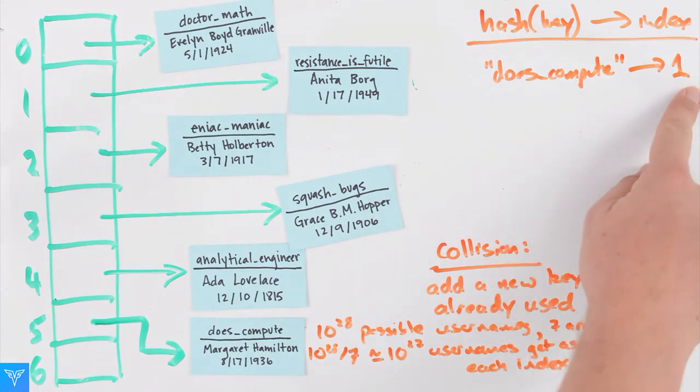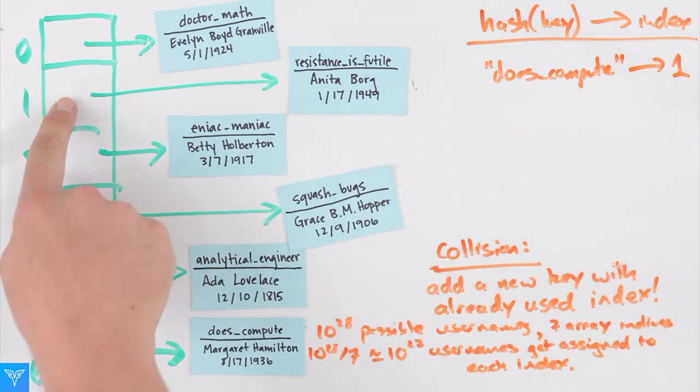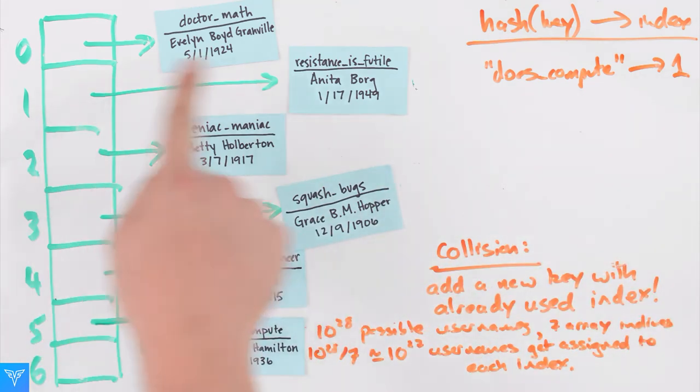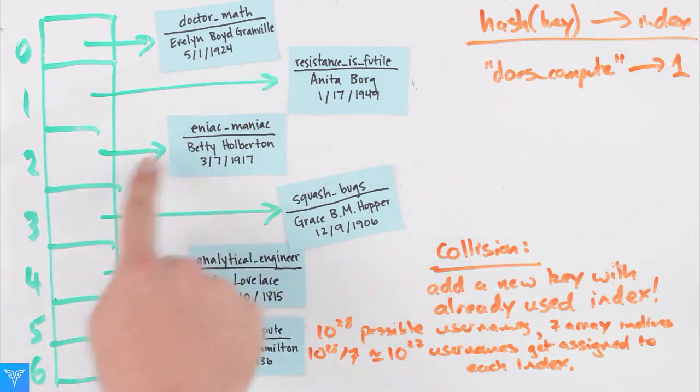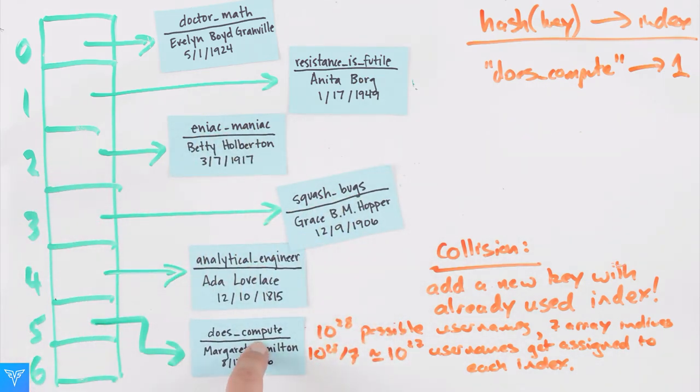How would we find does compute? First, our code computes the hash of does compute, and gets the index one, not five. Our code would start by looking at position one, and see does compute isn't stored there. So it would look at the next element, and it keeps checking until it reaches position five, and finds does compute.